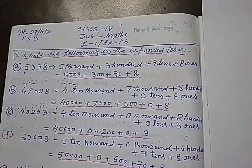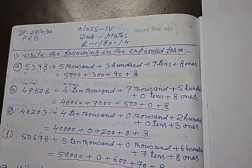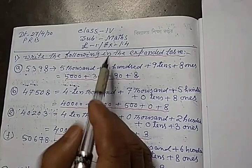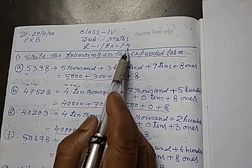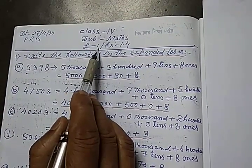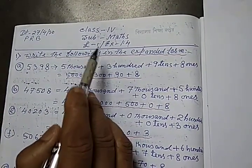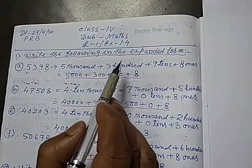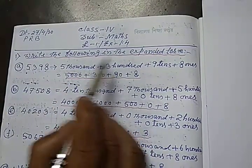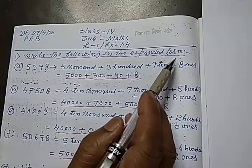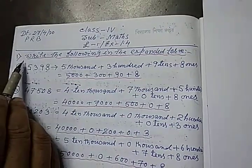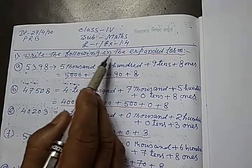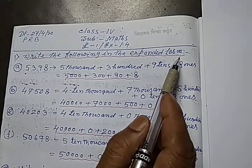Hello students, today we will do exercise number 1.4, lesson number 1, which is about the exponent form of the given number. Number 1: write the following numbers in the exponent form.